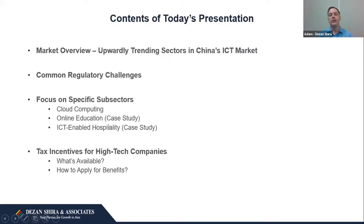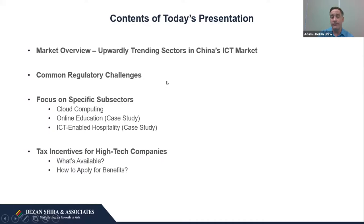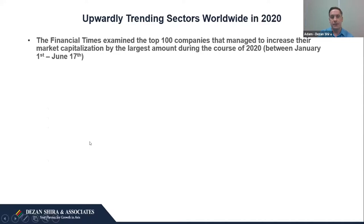Here are the contents for today. First, I'll give a market overview covering the upwardly trending sectors in China's ICT market. After that, Thomas will explain some common regulatory challenges. Then we'll focus on three specific subsectors: cloud computing, online education, and ICT-enabled hospitality. We've chosen these because one is difficult for foreign investment, the second is complex but possible, and the third is relatively straightforward. Finally, we'll talk about tax incentives for high-tech companies coming into China.